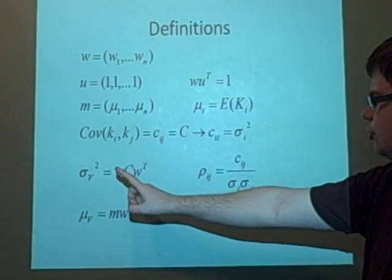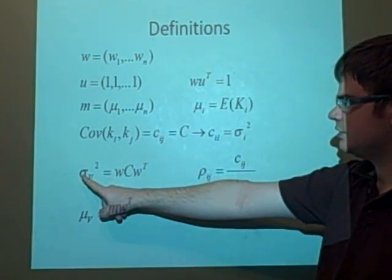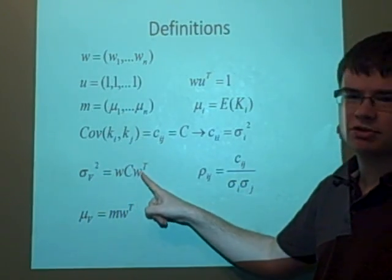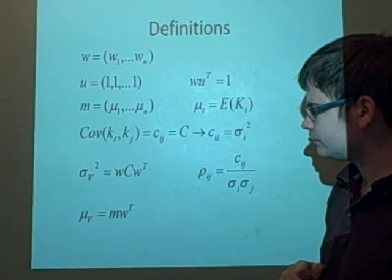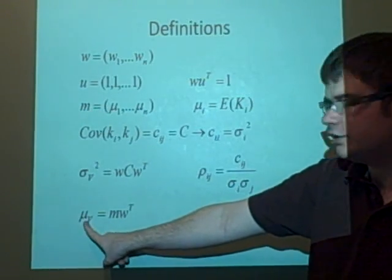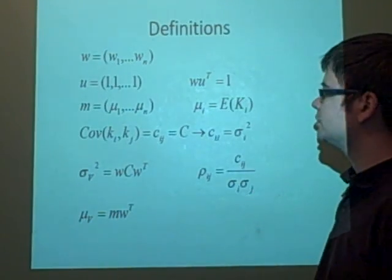Now, using this matrix form, we can say that the standard deviation of the wealth squared is equal to W times C times W transposed, and we can say that the expected return, the total expected return on the wealth, this is equal to M times WT.